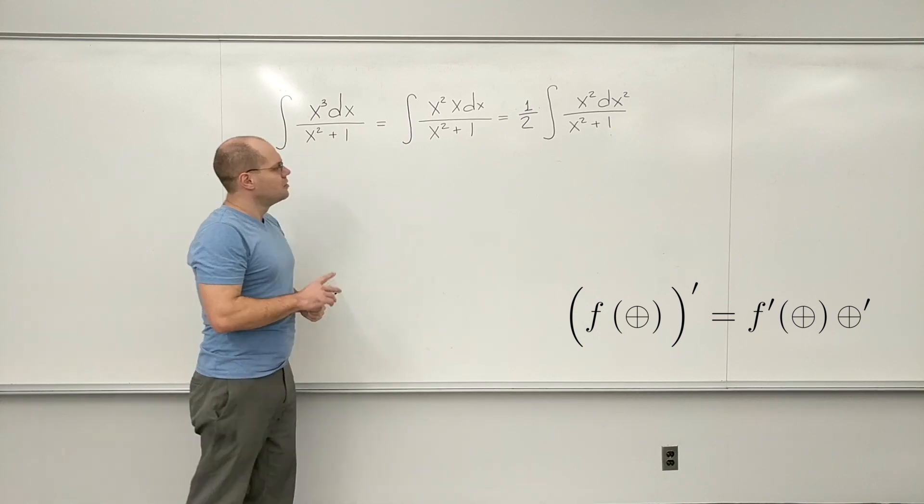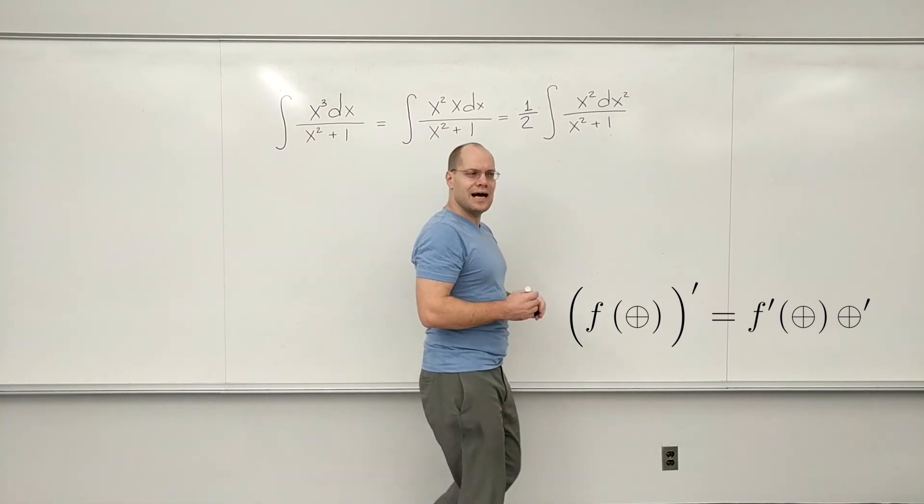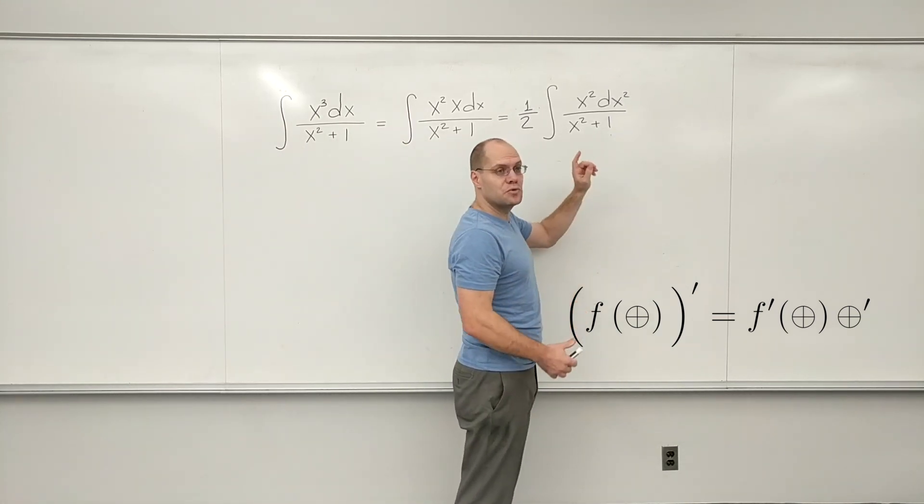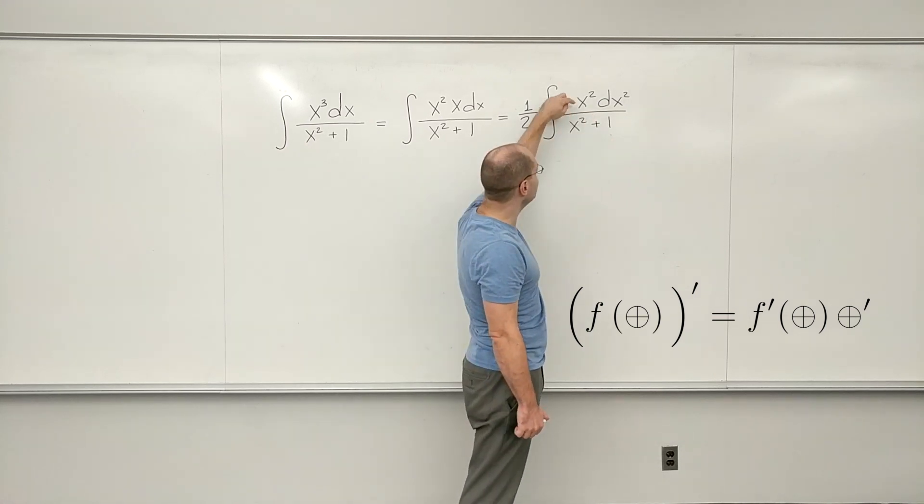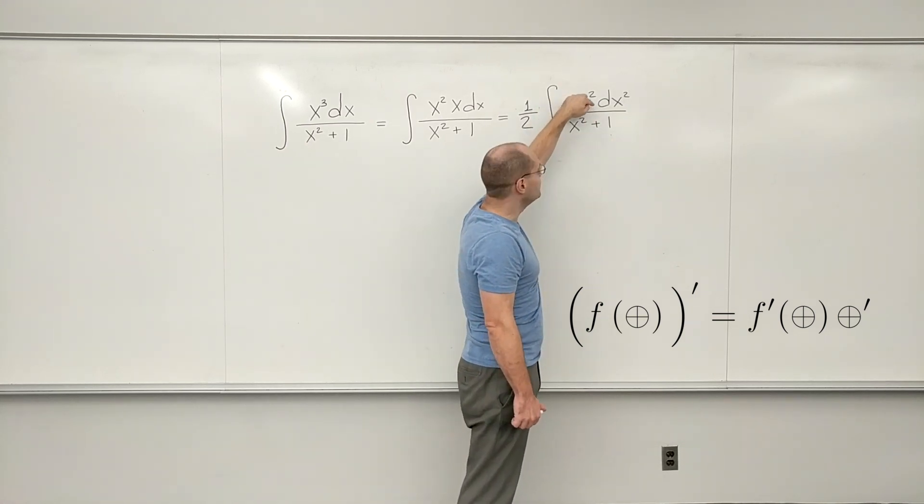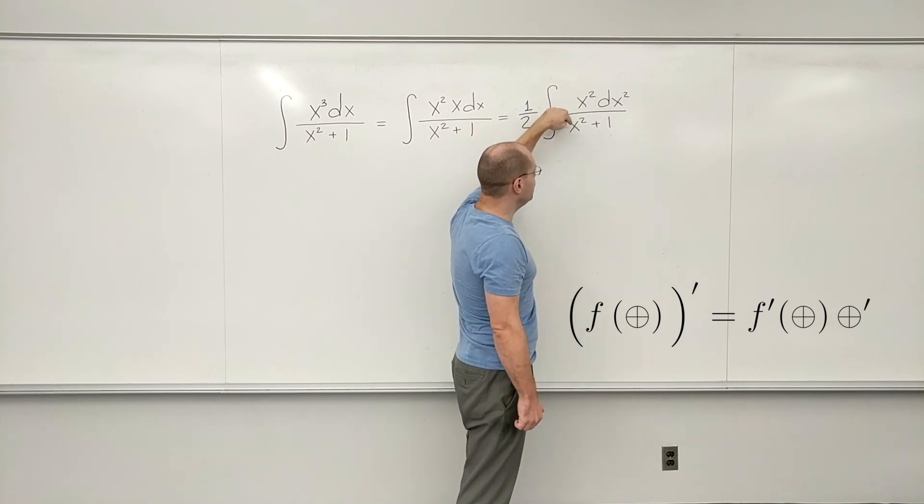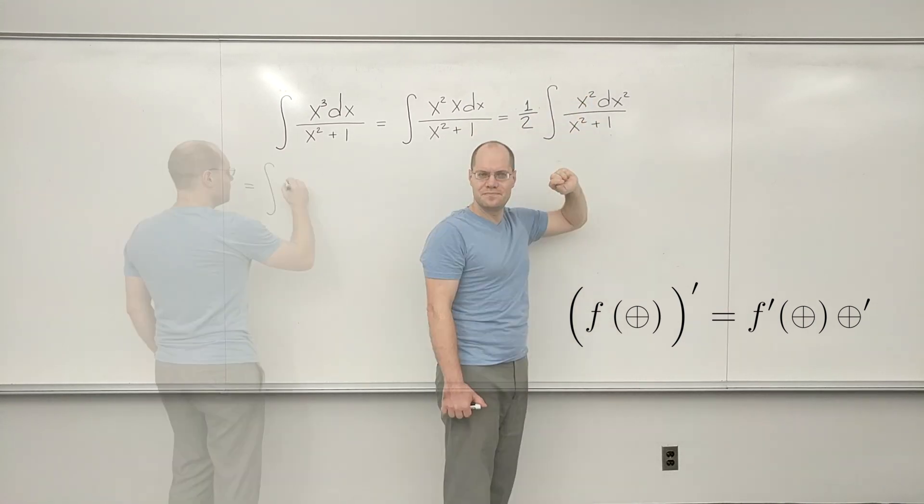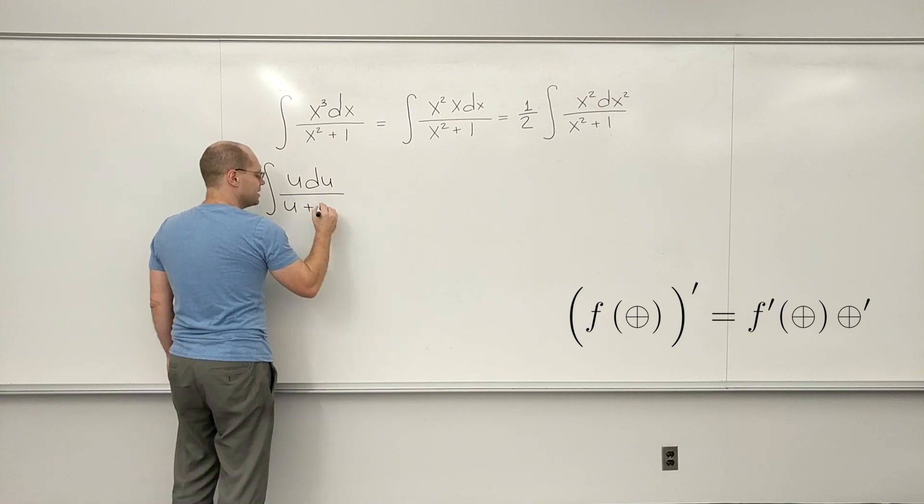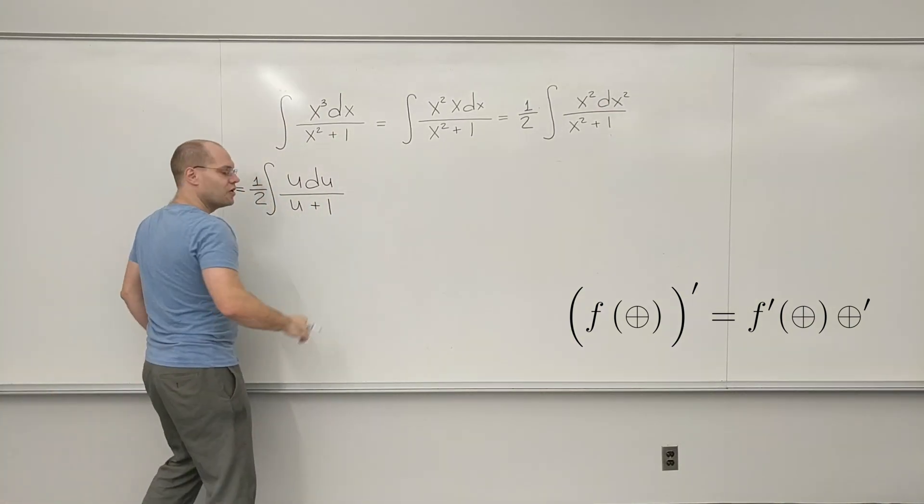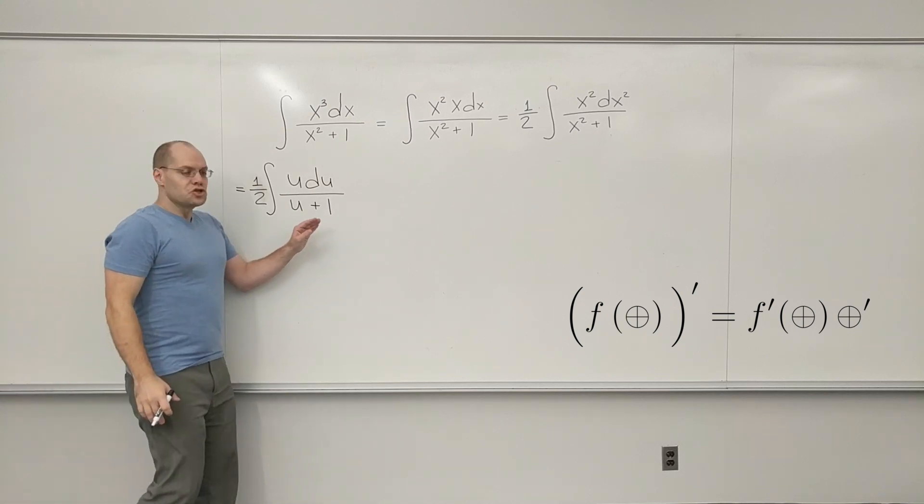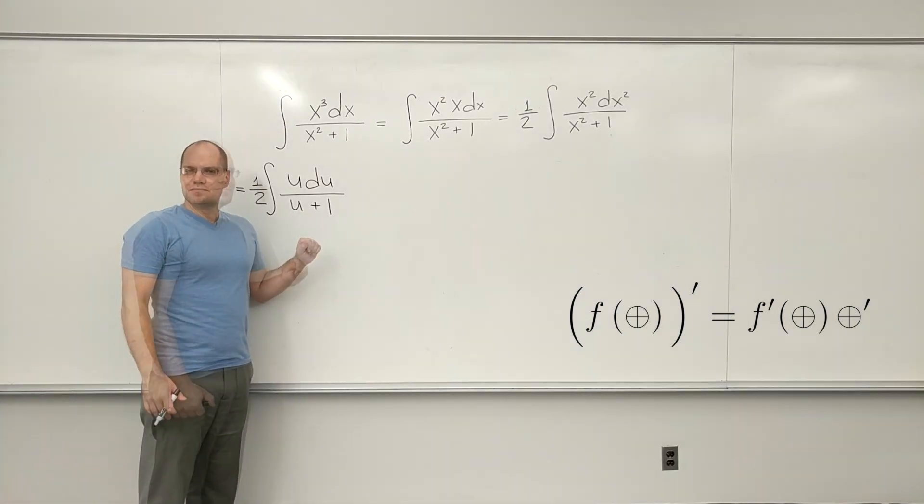So I will call it u. But let's imagine what will happen if I replace x squared with u. I'll just say it out loud. And I want you to imagine it in your head. This is u du divided by u plus 1. You're with me? Okay. So how are we going to do this now?